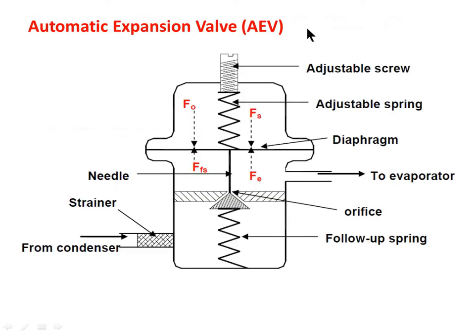Next are automatic expansion valves (AEV). The operation of the valve is automatic once the tension of the spring is adjusted. The components include an adjustable spring, adjustable screw, diaphragm, needle, strainer, orifice, follow-up spring, line from condenser, and line to the evaporator. Once the spring tension is set for the desired evaporator pressure, the valve will automatically regulate the flow of liquid refrigerant into the evaporator, maintaining the desired evaporator pressure irrespective of evaporator loading.